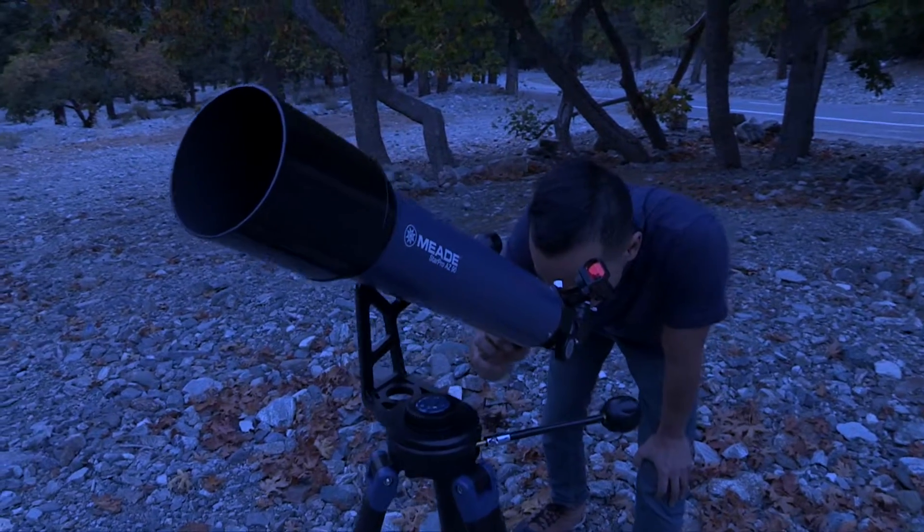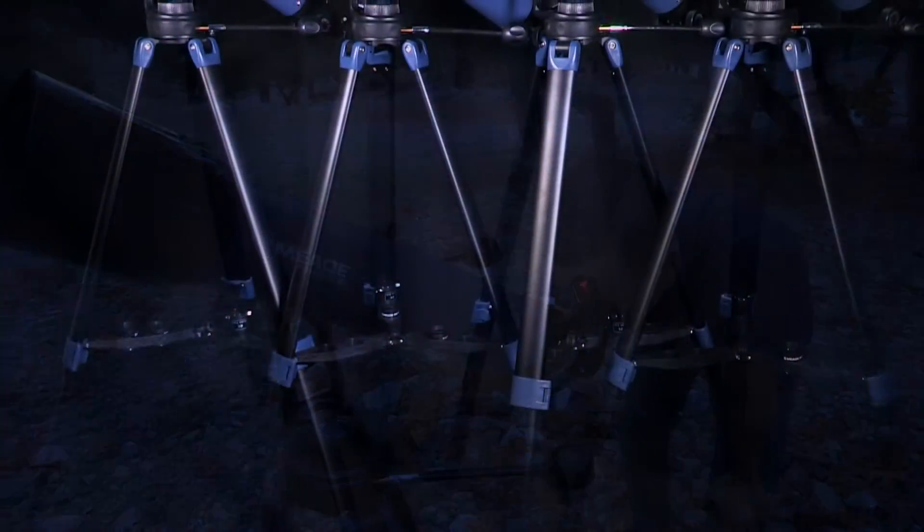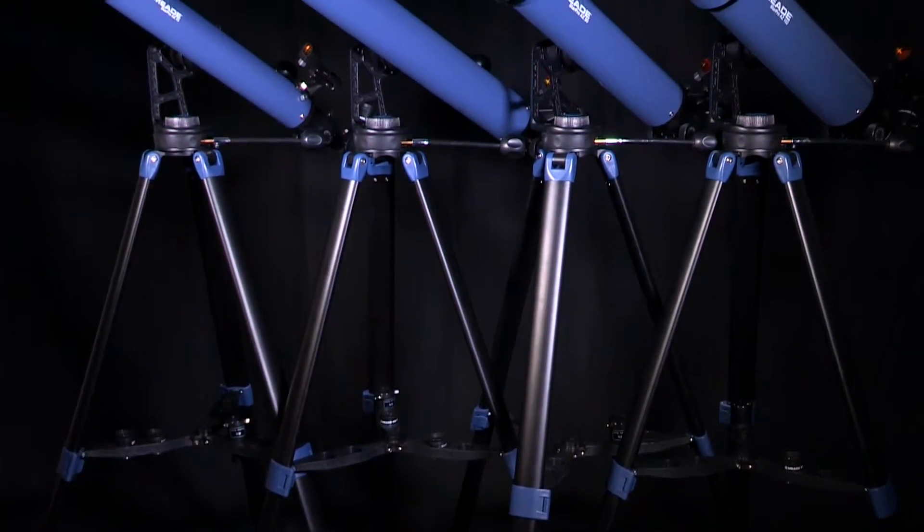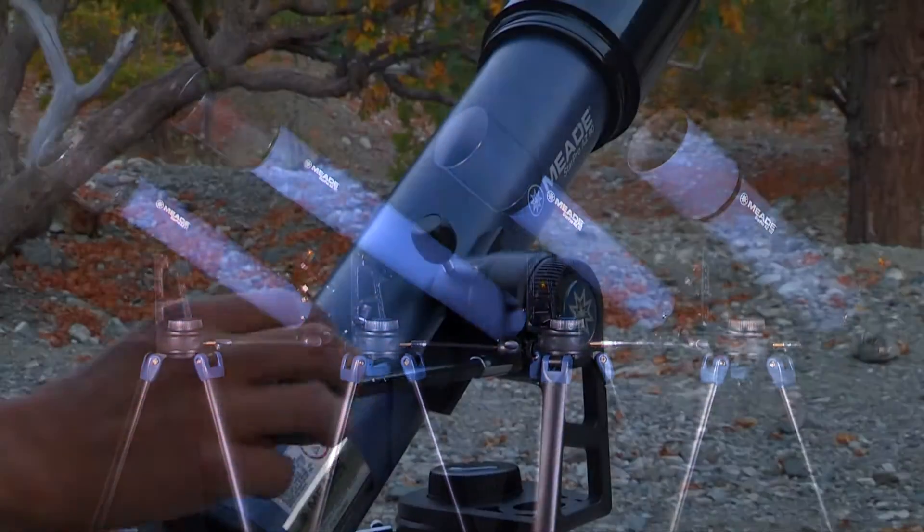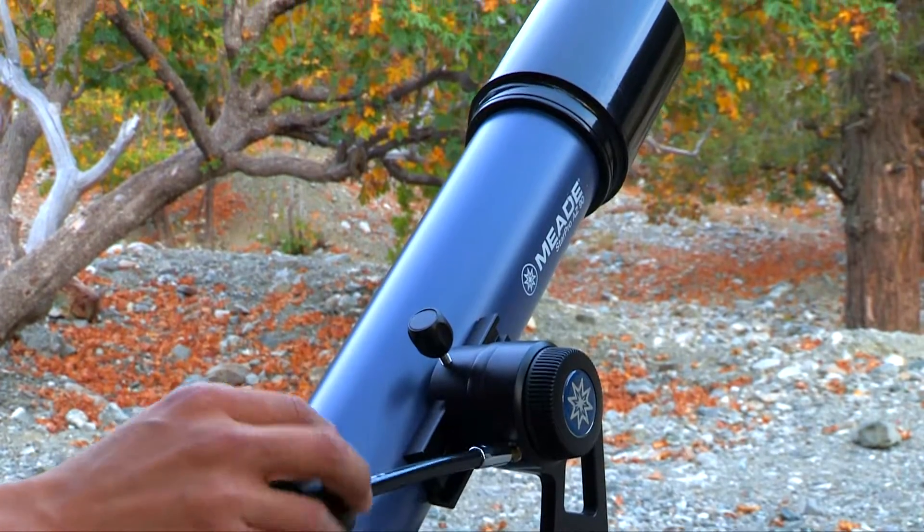Meet StarPro AZ, the perfect scope for the novice astronomer seeking to explore the universe. Available in 70, 80, 90, and 102mm apertures, the StarPro AZ has everything you need to start observing the night sky right out of the box.